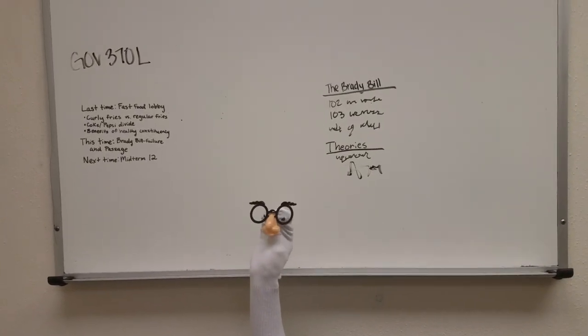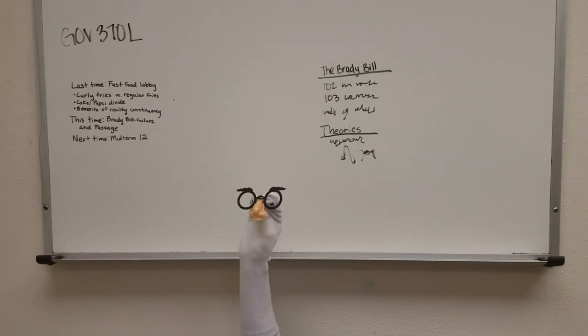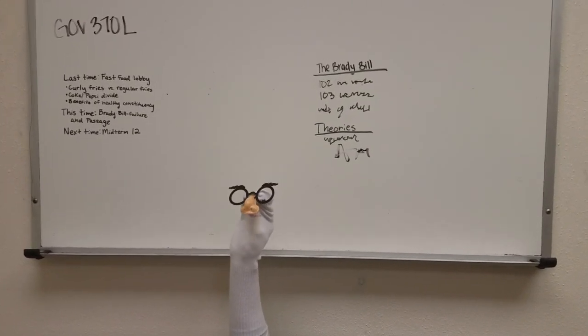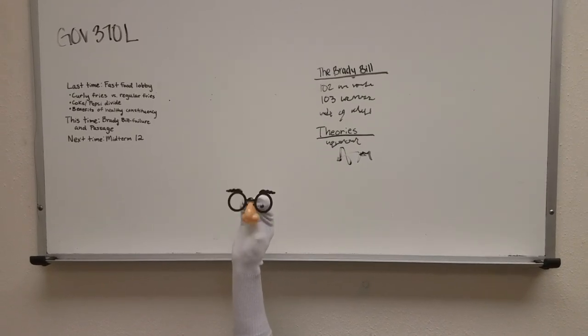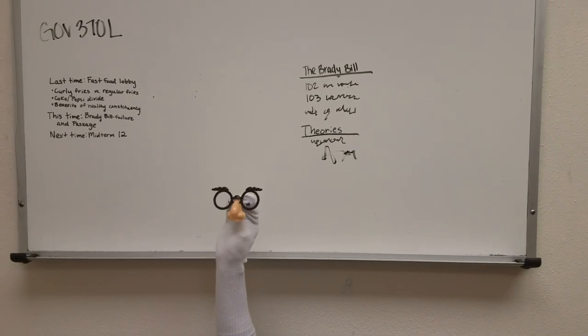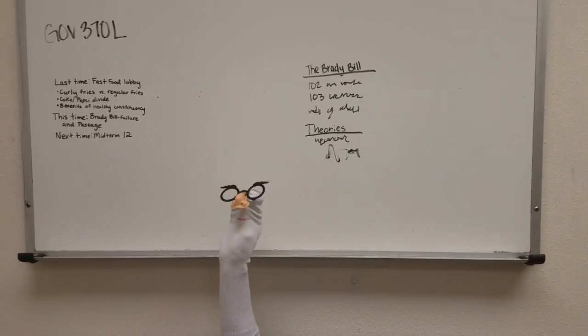So if you want to tie this back to the streams theory, the attempted assassination of Reagan and Brady is the politics stream, the rising violence is the problem stream, and the need for gun control policy is the policy stream. So mounting pressure from the public and the White House creating a policy window which allowed for the passage of the Brady Bill.